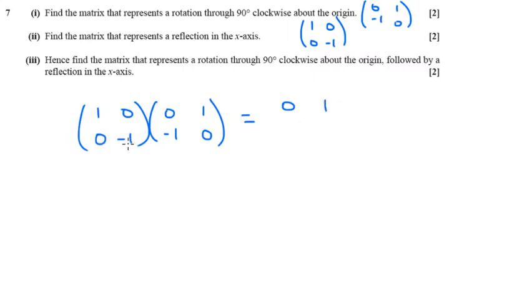0 times 0, plus minus 1 times minus 1, which is 1. And 0 times 1, plus minus 1 times 0, which is 0.